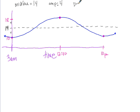We have a period of how long? From 3am to 10pm. So from 3am to 3pm is 12 hours, and then another 7 to 10pm. So it looks like we have a 19-hour period. And because this starts at the bottom, I'm going to call this a negative cosine graph.